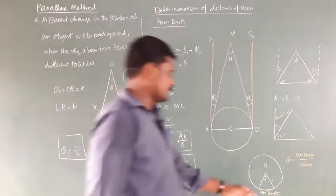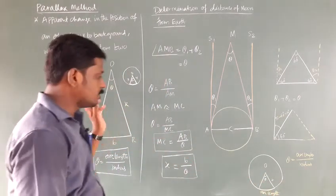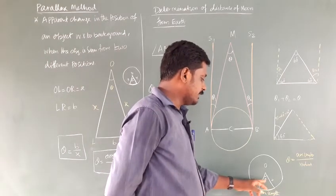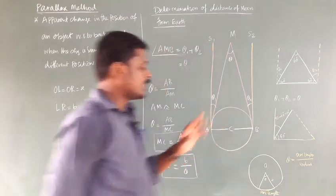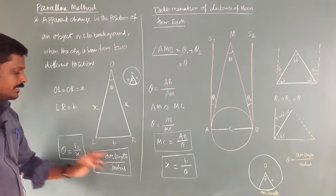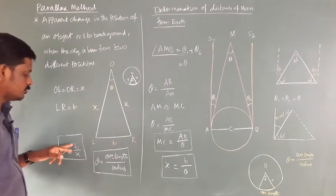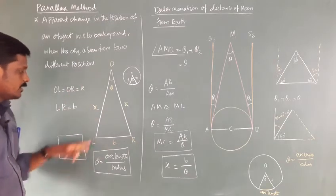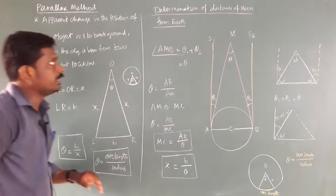Consider a circle of radius R — R is the distance OR or OL. It makes an angle theta. The angle theta equals arc length divided by radius. So theta equals arc length divided by radius, where the arc length is the basis B, and the radius is the distance OL or OR, which is X.